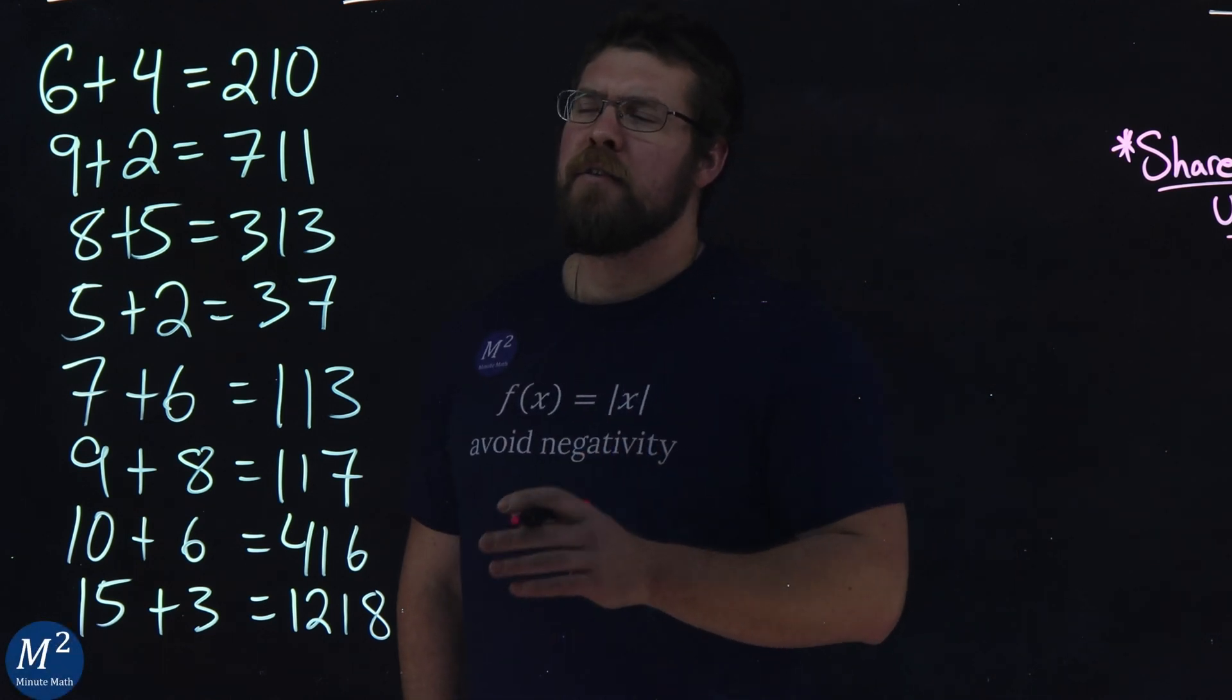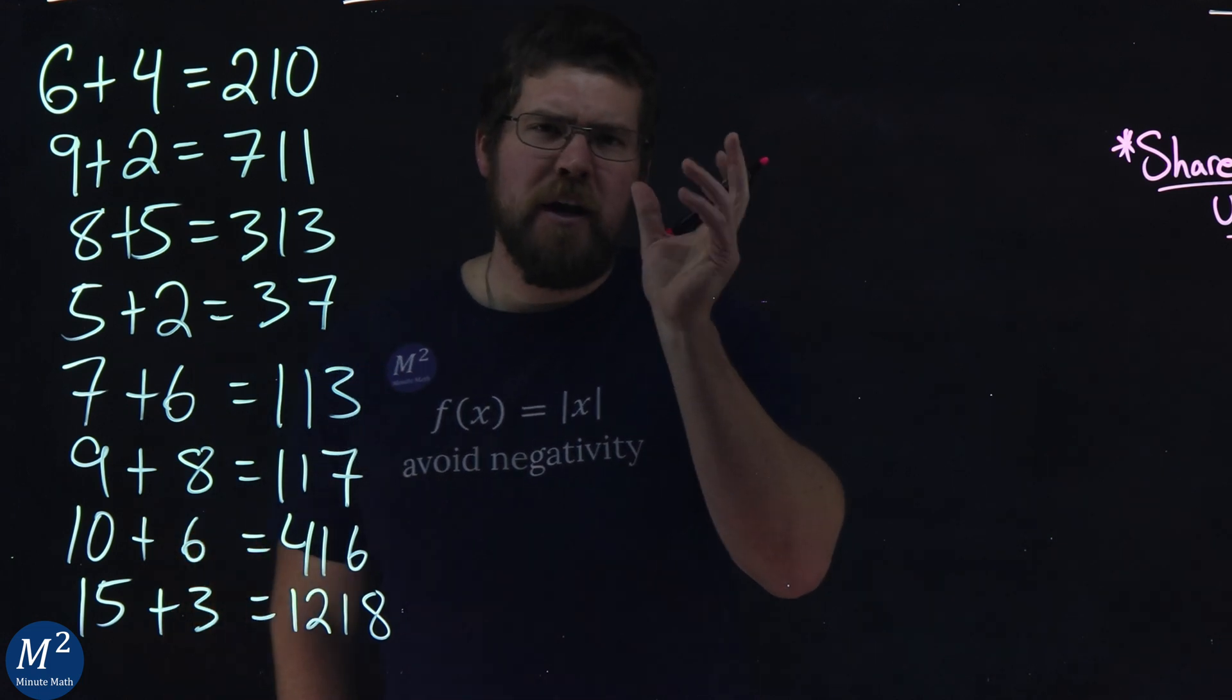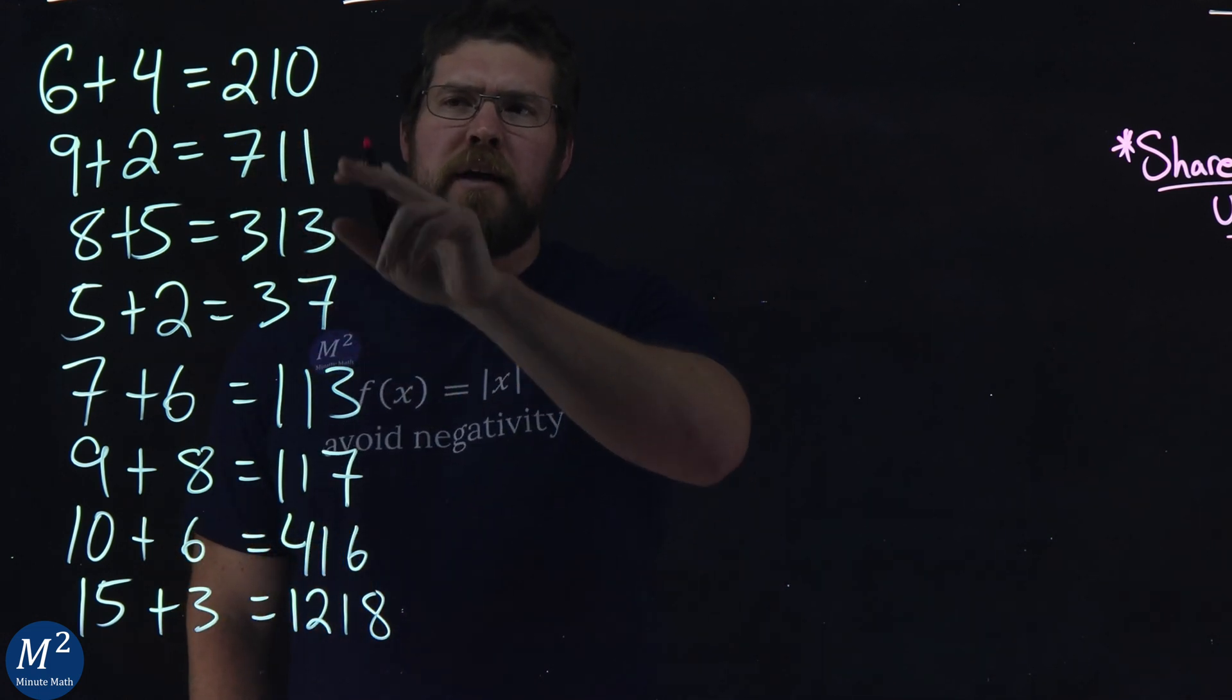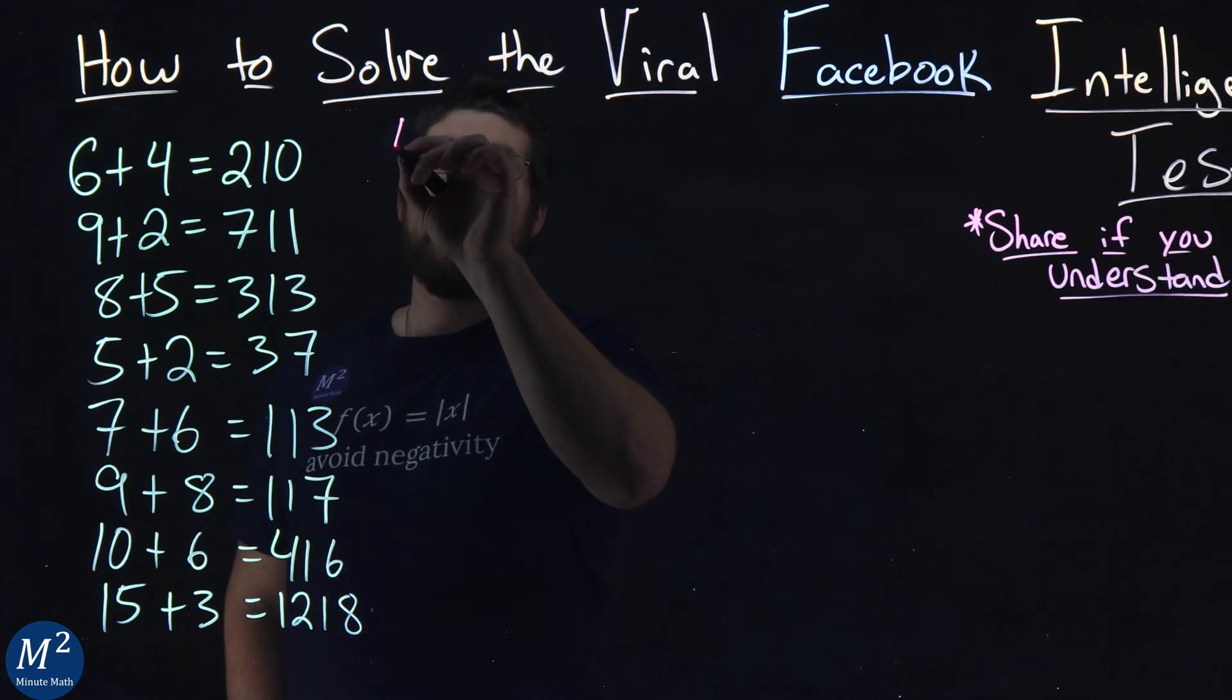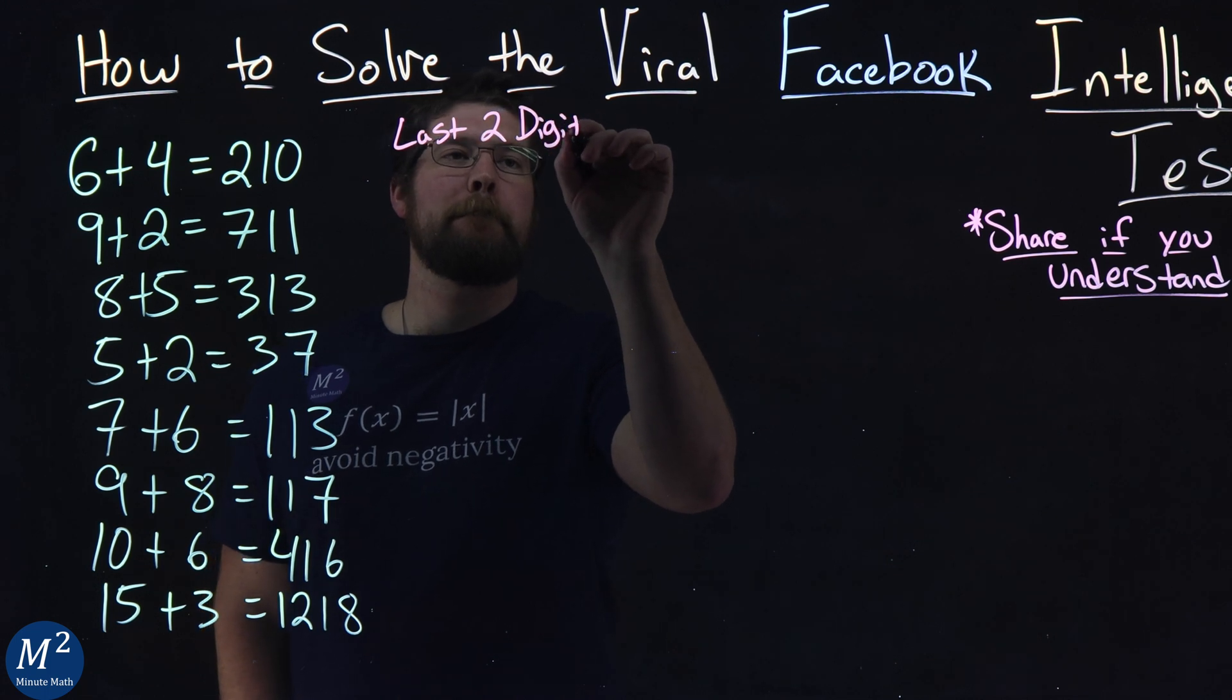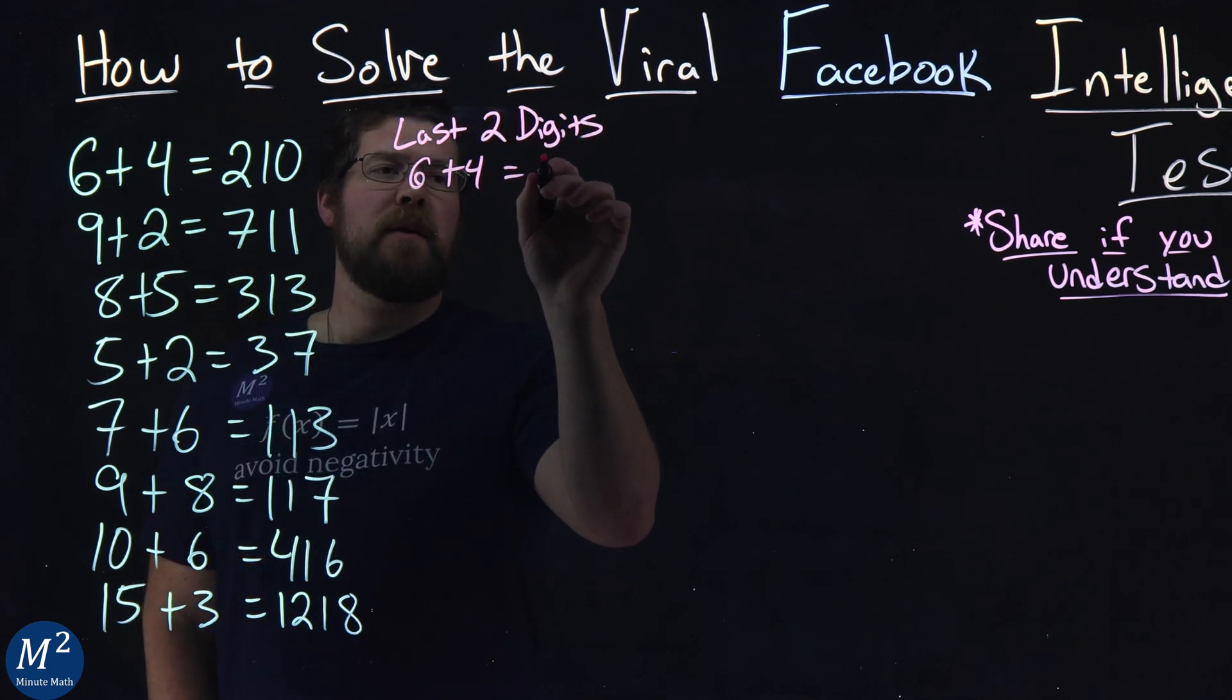So the first thing I'm noticing here is that we have a 6 plus 4 equals a 2, 10. And I'm trying to find patterns with the numbers here. Now notice 6 plus 4 equals the 10. So for the last two digits, what do we see? Well, a 6 plus 4 gives me the 10.